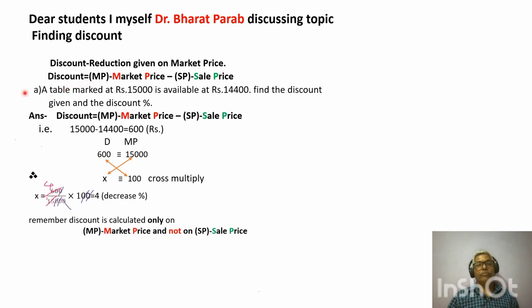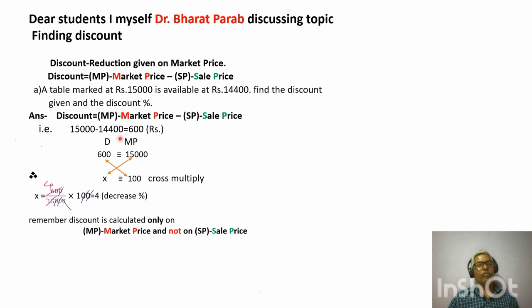To understand this, we will see some examples. The first example: a table is marked at rupees 15,000 — this is the market price — and is available at rupees 14,400. Find the discount given in rupees and in percentage. It is very easy to find in rupees as two values are given clearly. Discount = market price minus sale price = 15,000 minus 14,400 = 600 rupees.